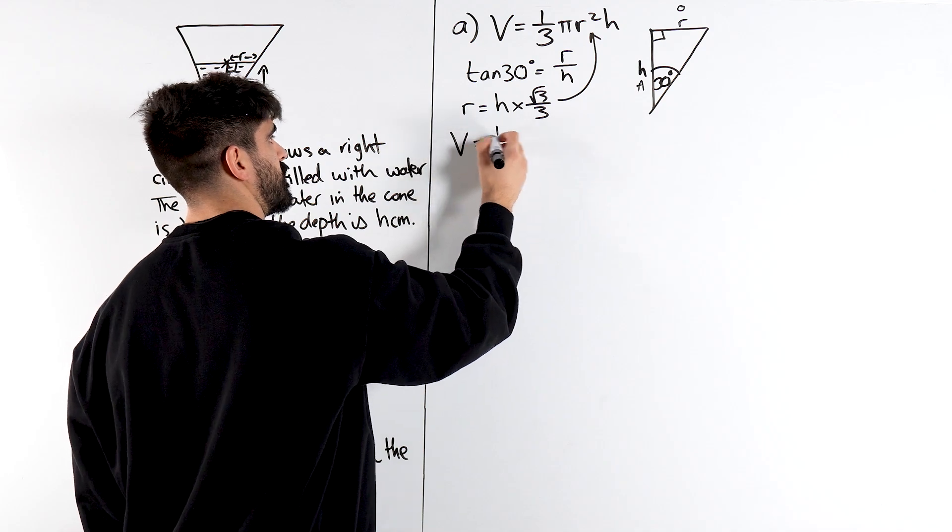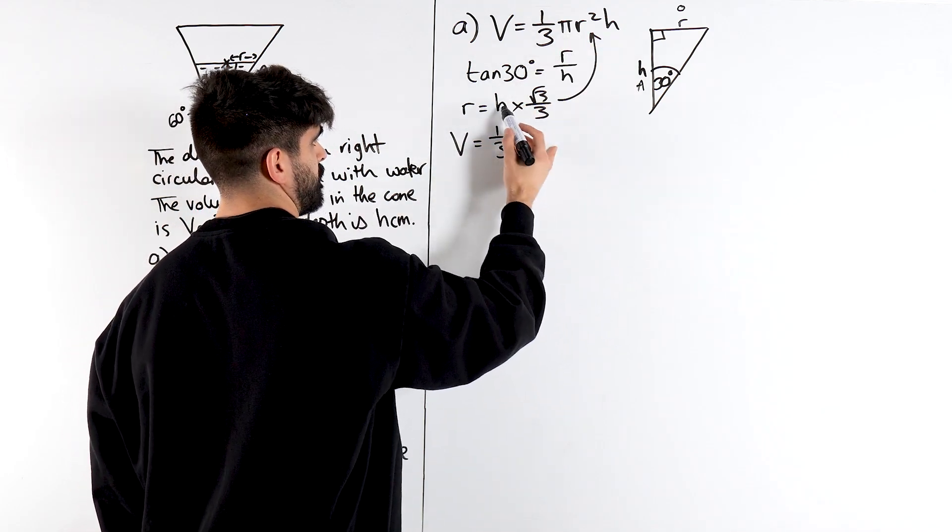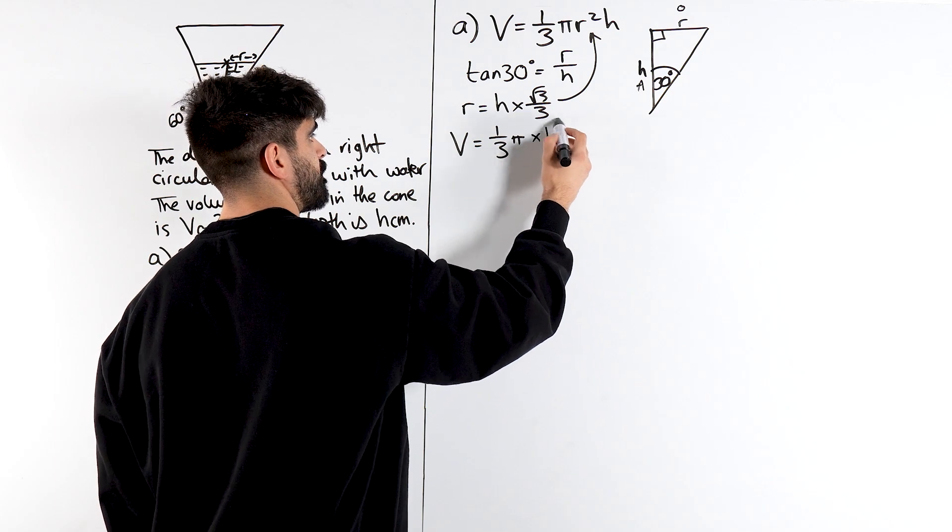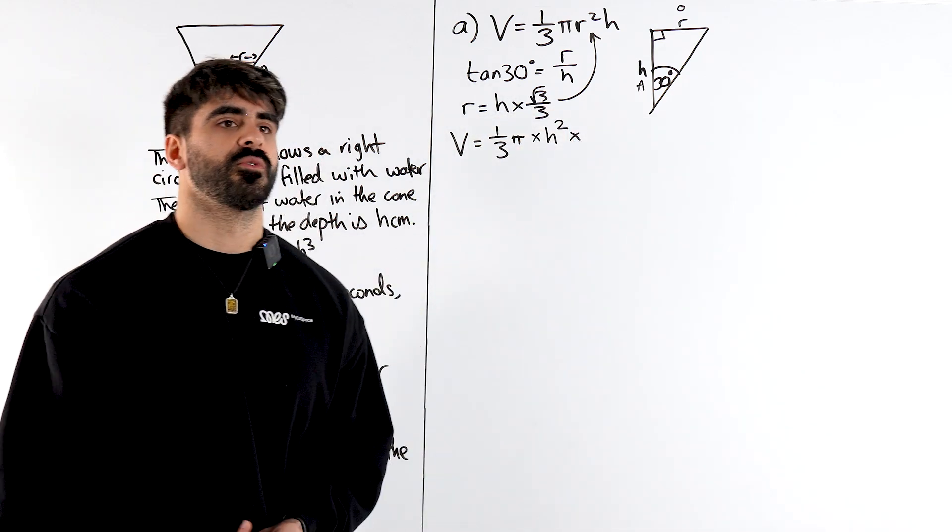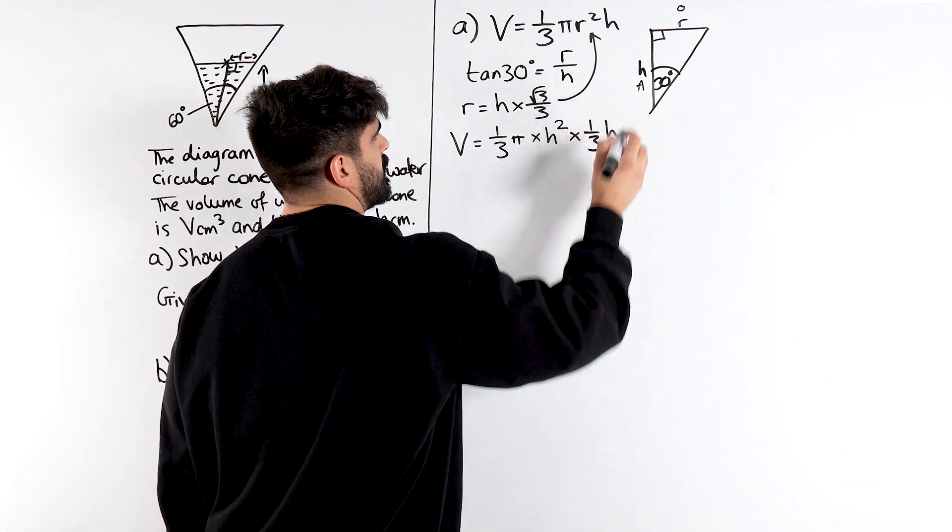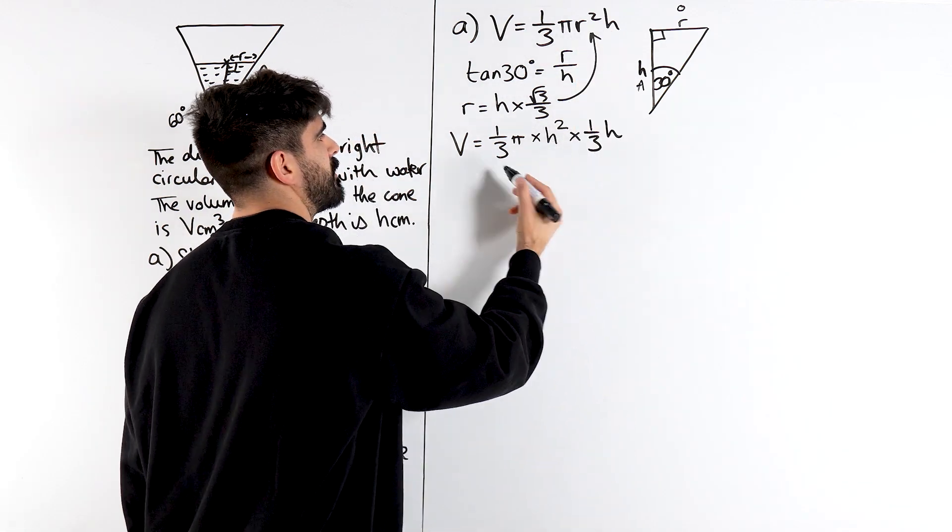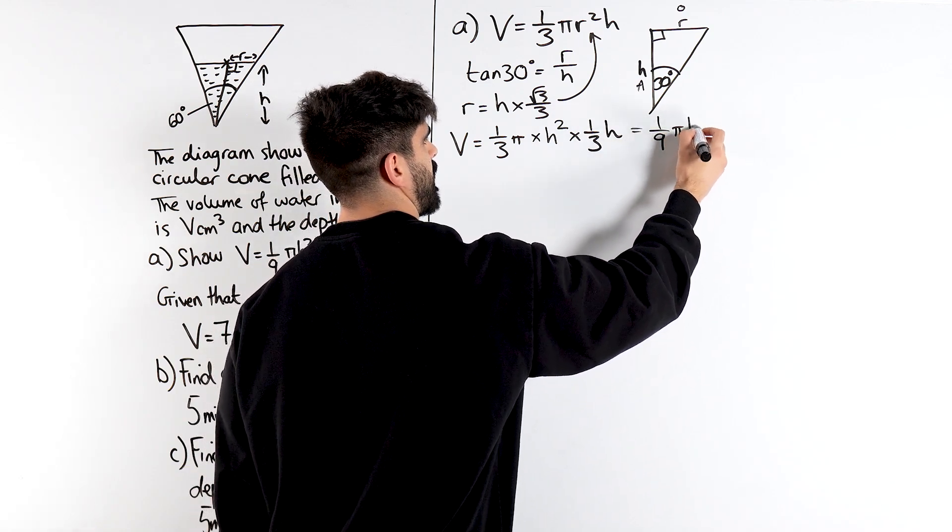And we're going to plug that in here. So, the volume then is a third pi. Now, we're going to square all of this. So, we're going to get h squared. And when you square this, you can think of this as 1 over root 3 as well. It will give you a third. You can use your calculator if you want. Then we have that h at the end. And when we simplify that, we get the answer, 1 ninth pi h cubed.